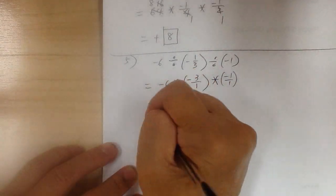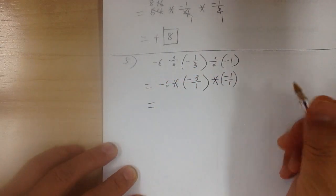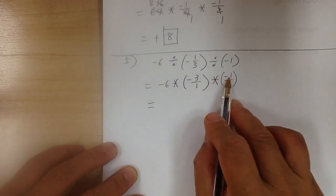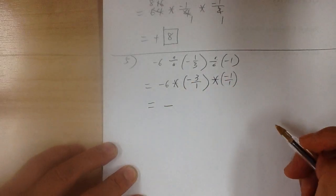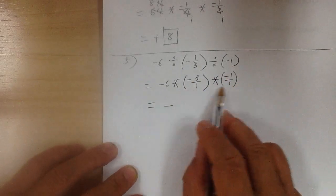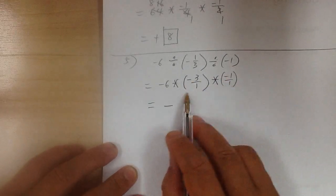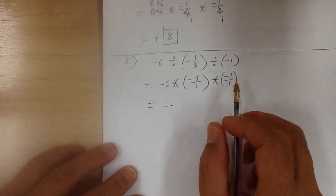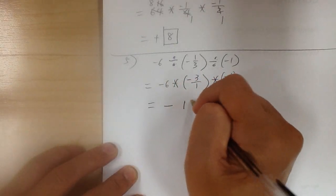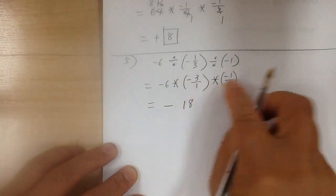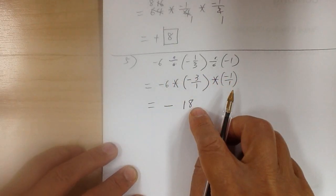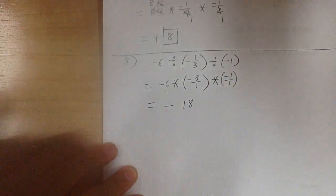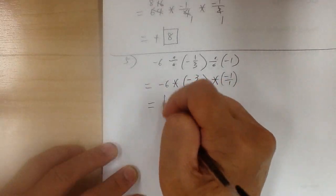So now, that's going to take care of the sign — negative times negative times negative will give you a negative. The number: there's nothing on the bottom to cancel out, so you just multiply. 6 times 3 is 18, and times 1 is still 18. We already took care of all the negatives, so the answer is negative 18.